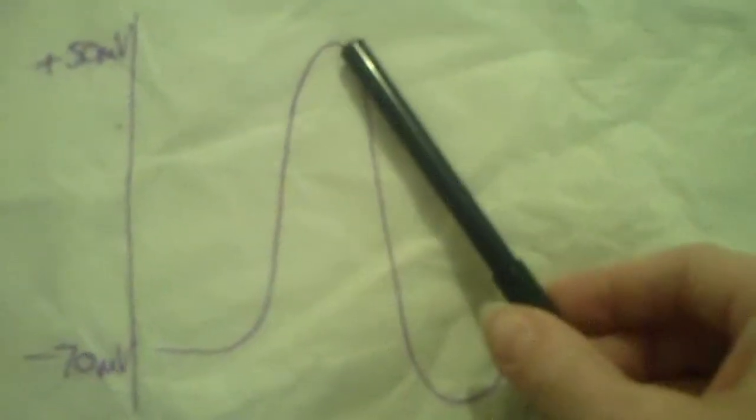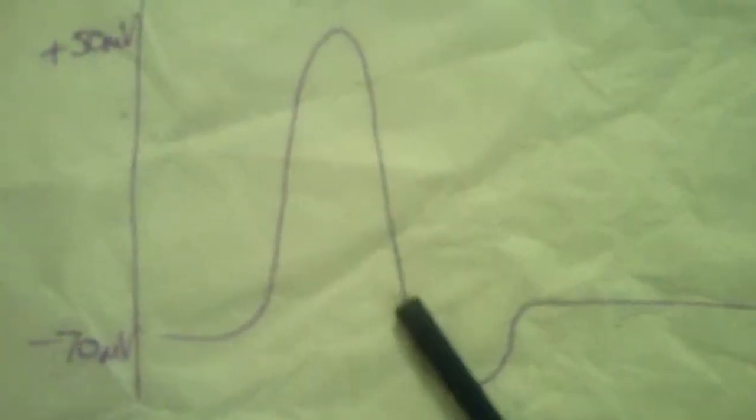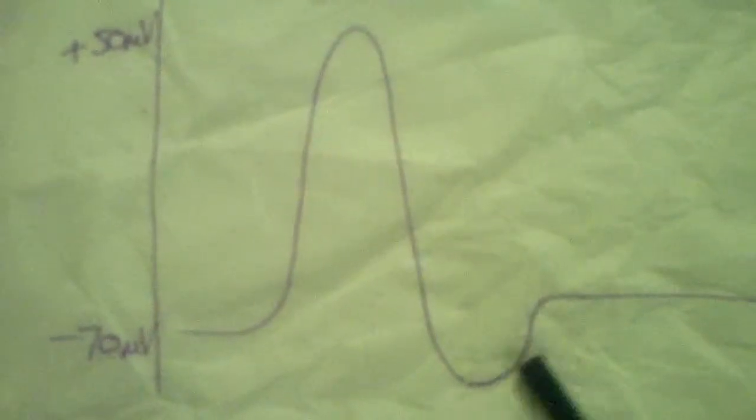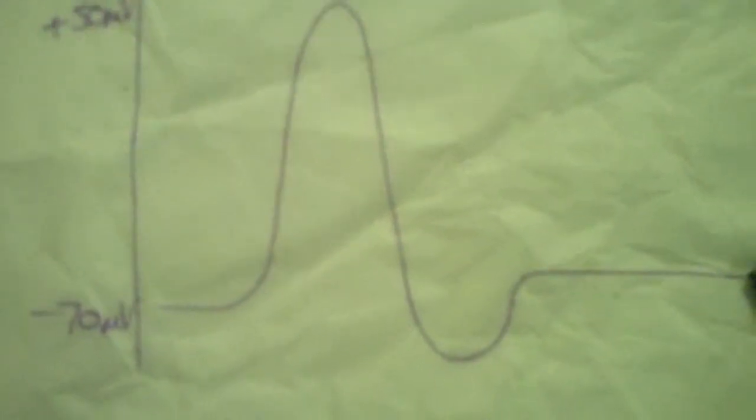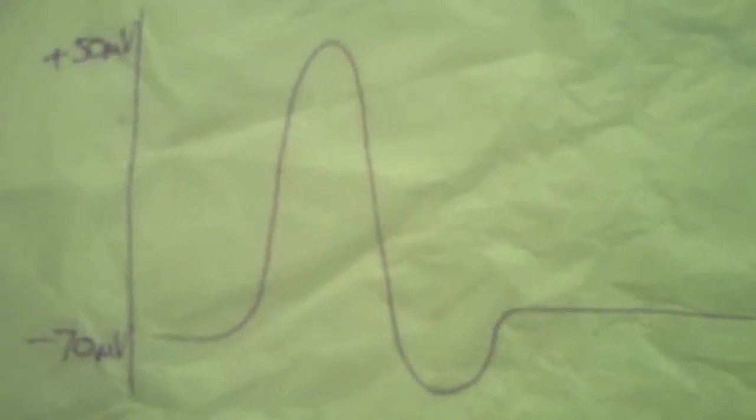Then we go up to plus 50 millivolts, back down to just below minus 70 millivolts and back again to the resting potential. But how is this action potential actually generated?